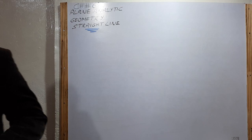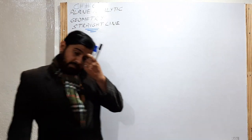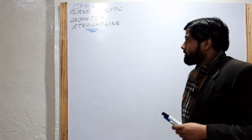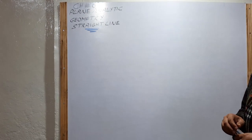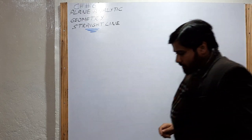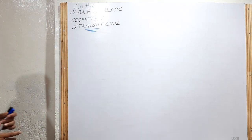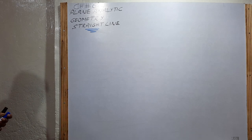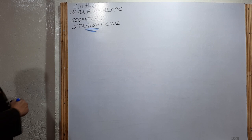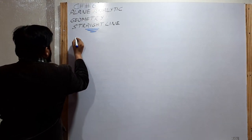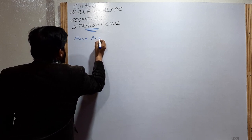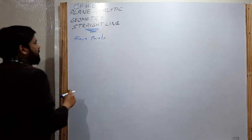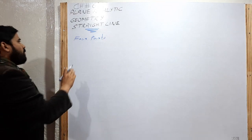Bismillahir Rahmanir Raheem. My name is Muhammad Yasin, Edwards College, Peshawar, Pakistan. Dear students, last time we discussed the formulas and definitions of analytic geometry and some concepts related to collinear points. Now there are more concepts — how we prove that four points represent a square.